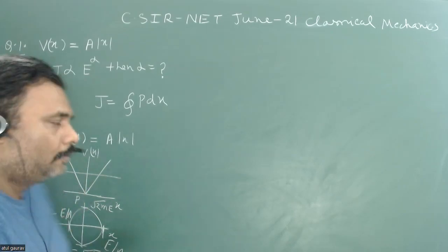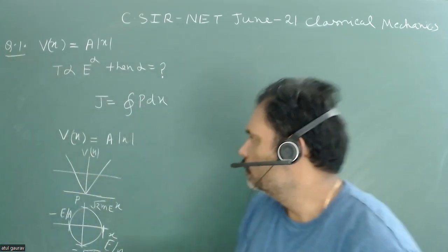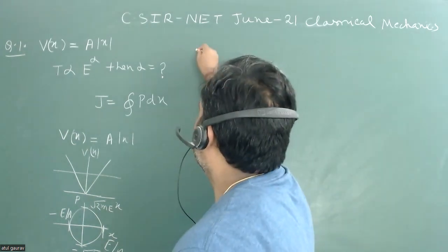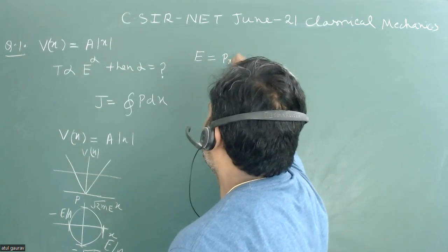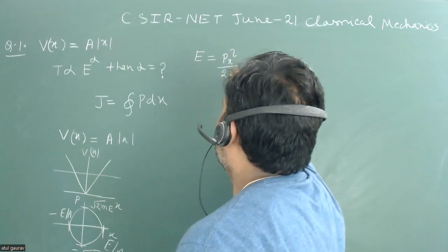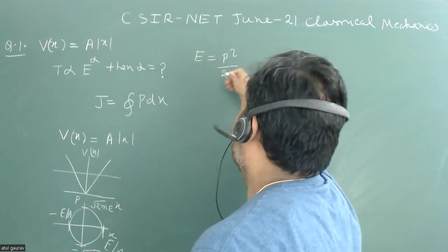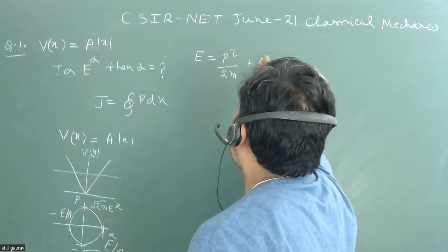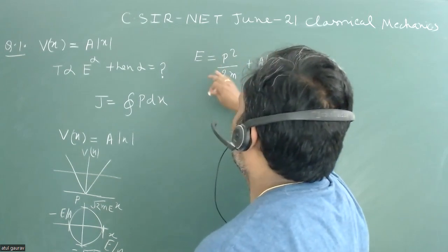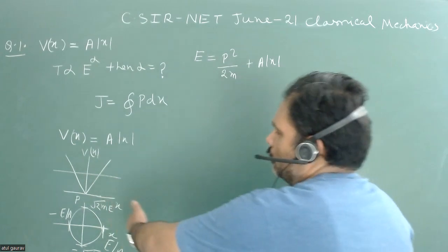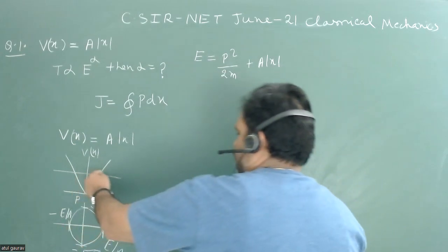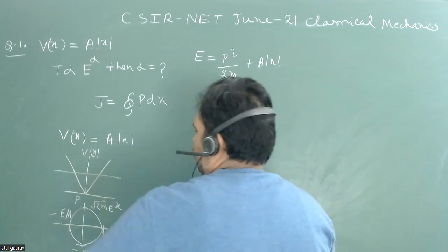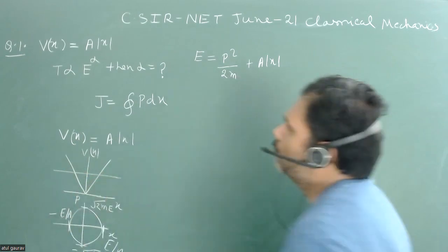So how will you draw this particular phase curve? Very simple, you just take the total value of energy. This energy is equal to p squared upon 2m, or you can say p squared by 2m plus a mod x. So now we can easily put all these coordinates and these are turning points also. Particularly start here, go to there, and again it will come back.